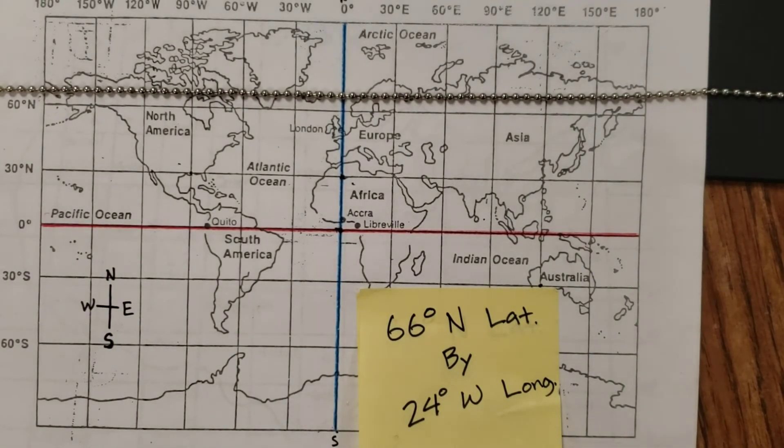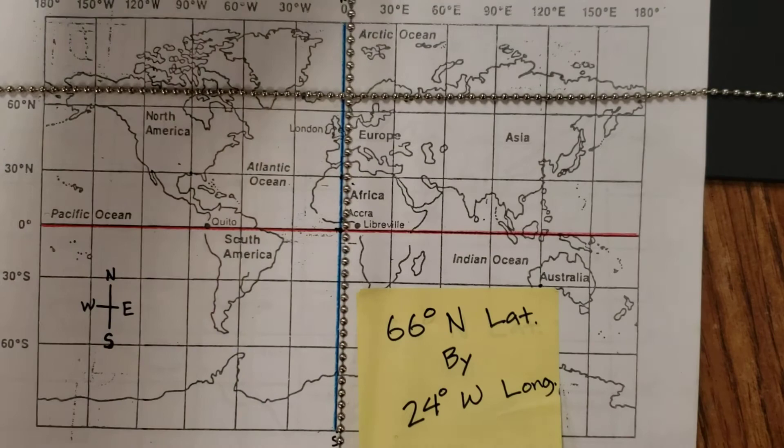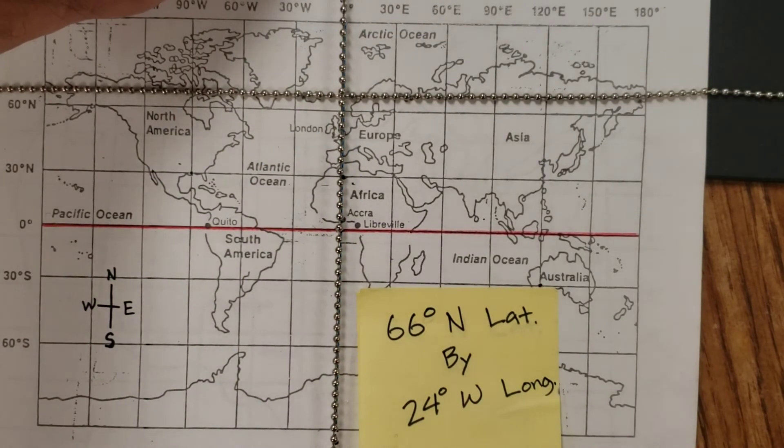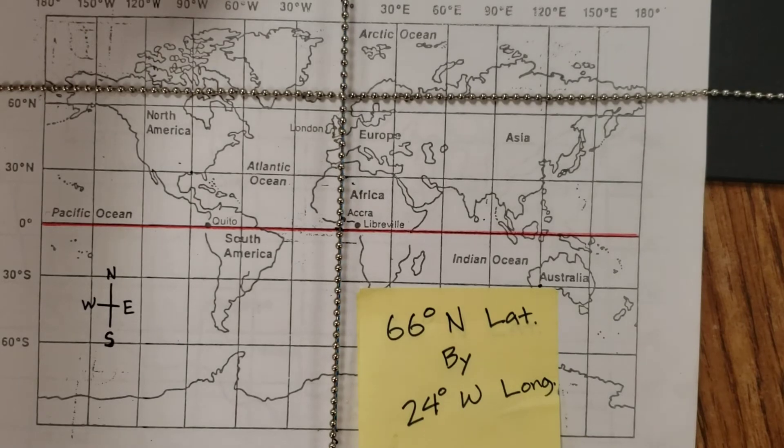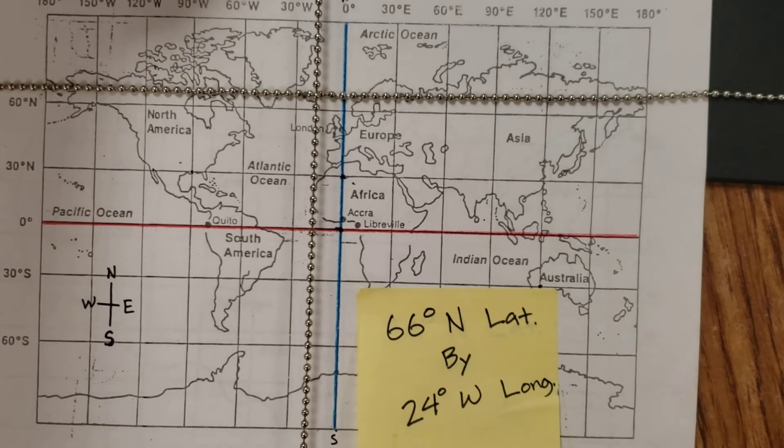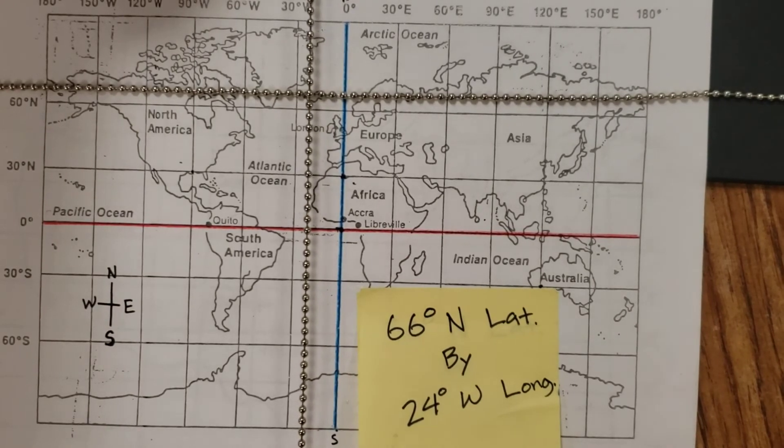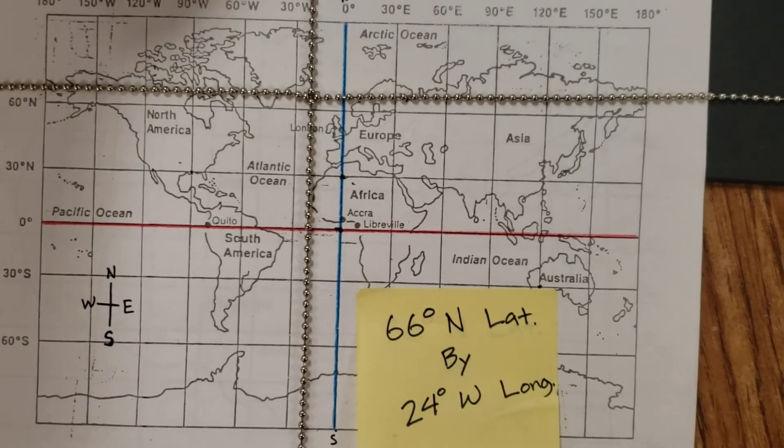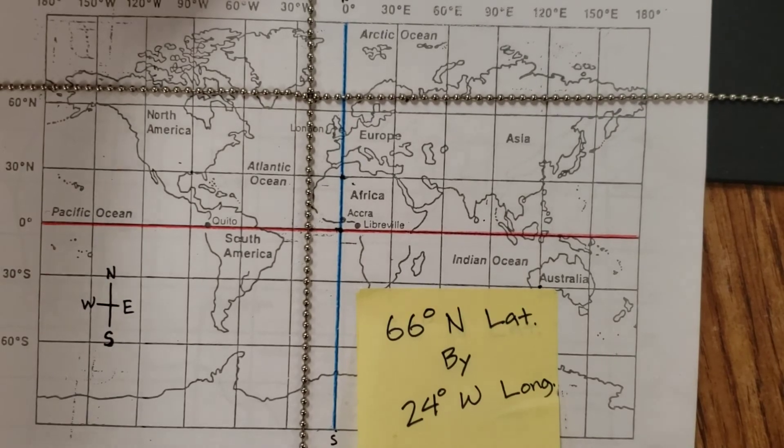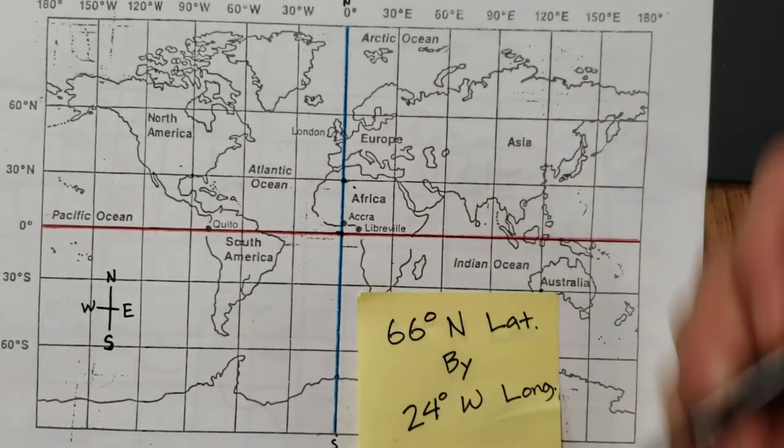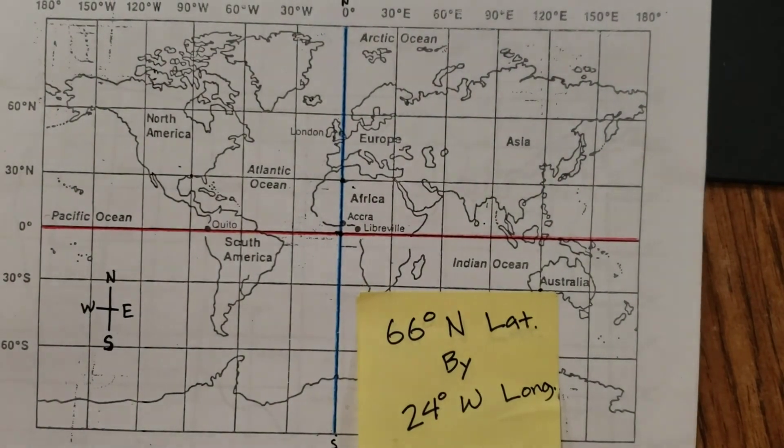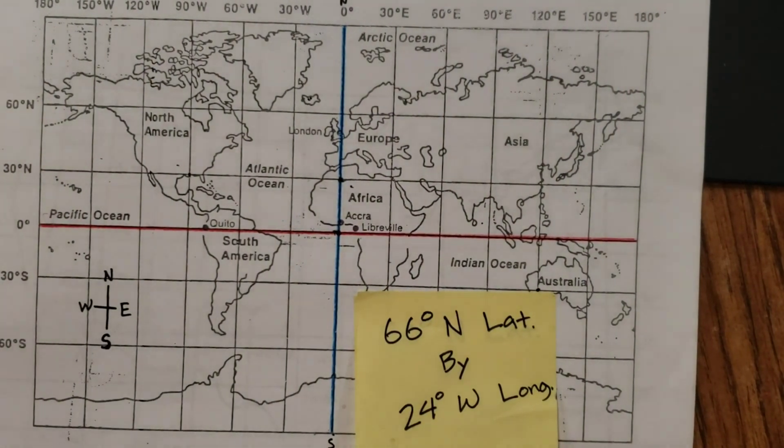And then let's do our longitude line, our prime meridian's longitude. And which way am I going? Am I going to move east or am I going to move west? It says west. So I'm moving west almost to 30, kind of right there, right? And let's look and see who's right under there on our map. Iceland. Again, I hope you dressed appropriately if you're going to Iceland. It's very different than the Sahara Desert.